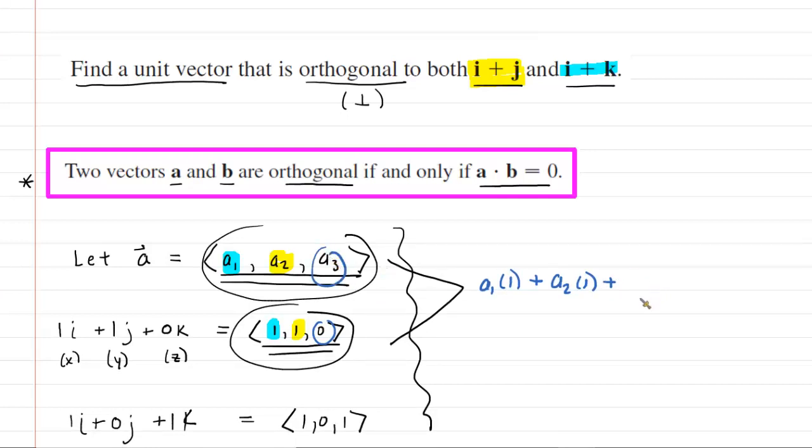And then add that to the result of multiplying the Z components. Now notice, of course, 0 times A3 will just be 0. So that's just going to be plus 0. We don't need to write it in there. And then the theorem tells us to set this equal to 0. Now, of course, we can simplify this. This is just telling us that A1 plus A2 will equal 0. So this is going to be a useful equation to us. We will return to it shortly.